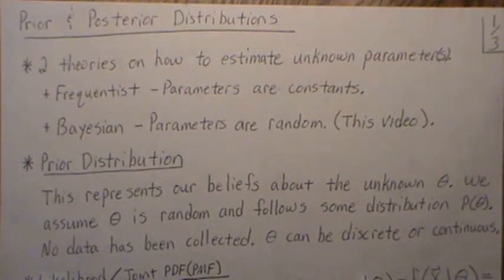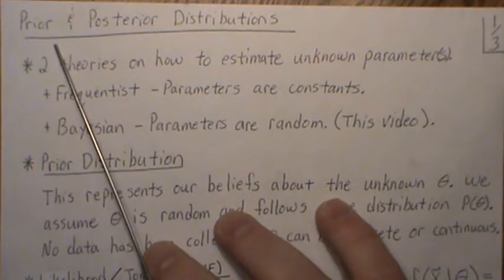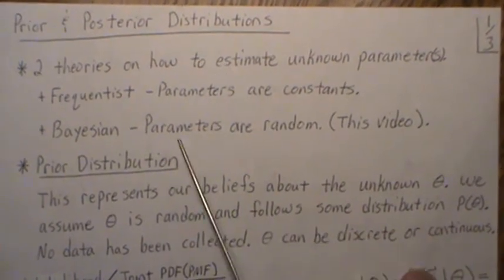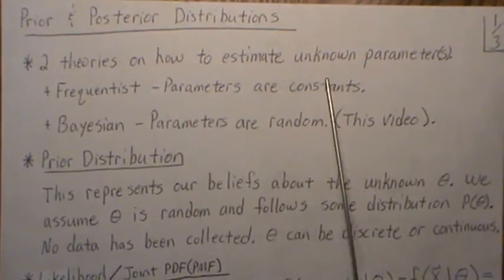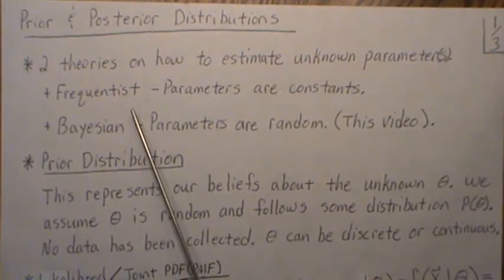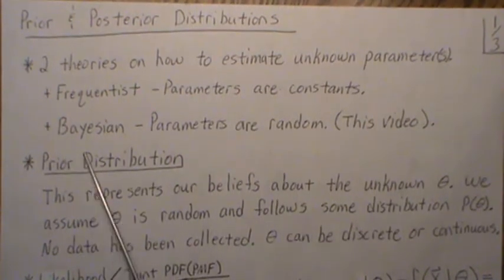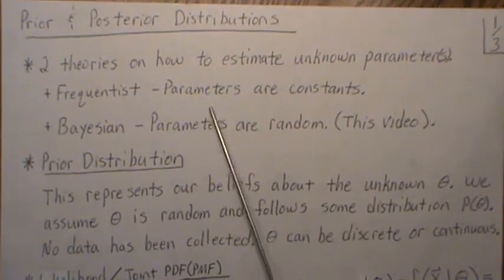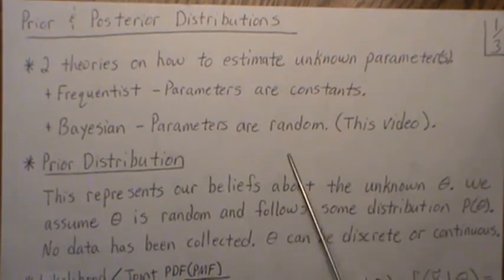This is the next video in a playlist called parameter estimation. We're going to do a couple of videos on Bayesian theory to estimate parameters, but first I need a couple of background videos. We're going to look at prior and posterior distributions in Bayesian analysis. There are two main theories in statistics on how to estimate unknown parameters: the parameters are constant, which is called frequentist theory, or the parameters are random, which is Bayesian theory.